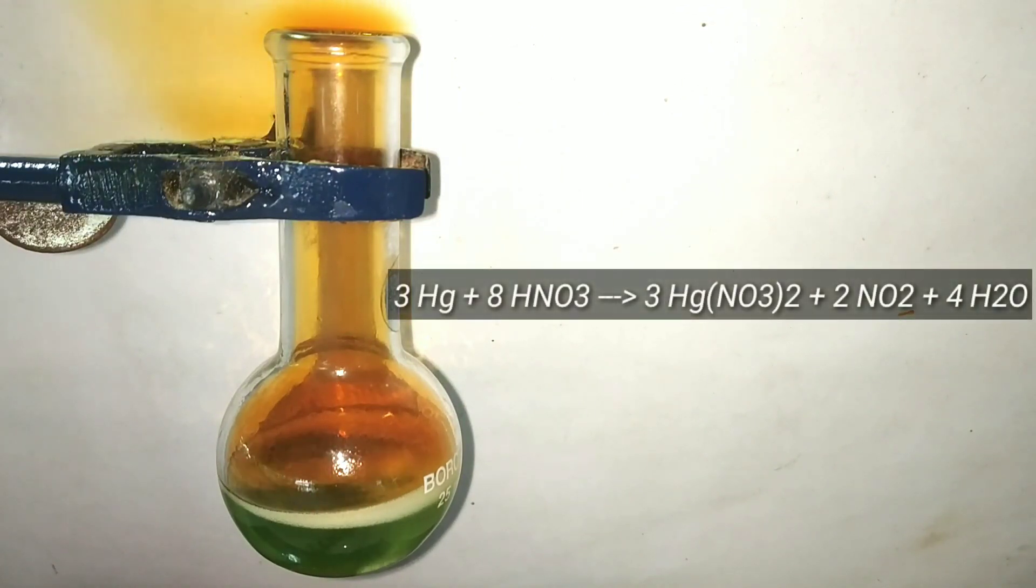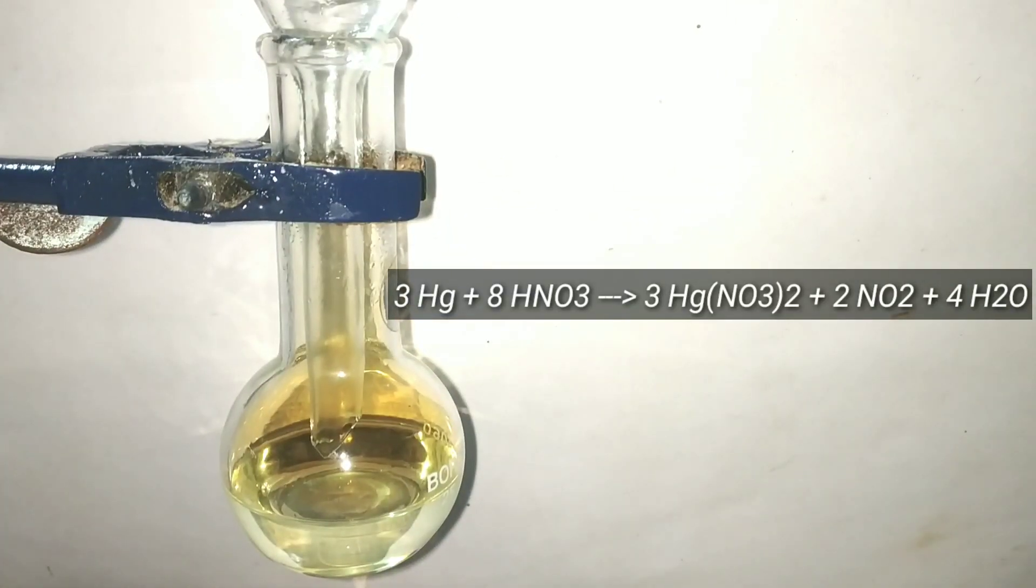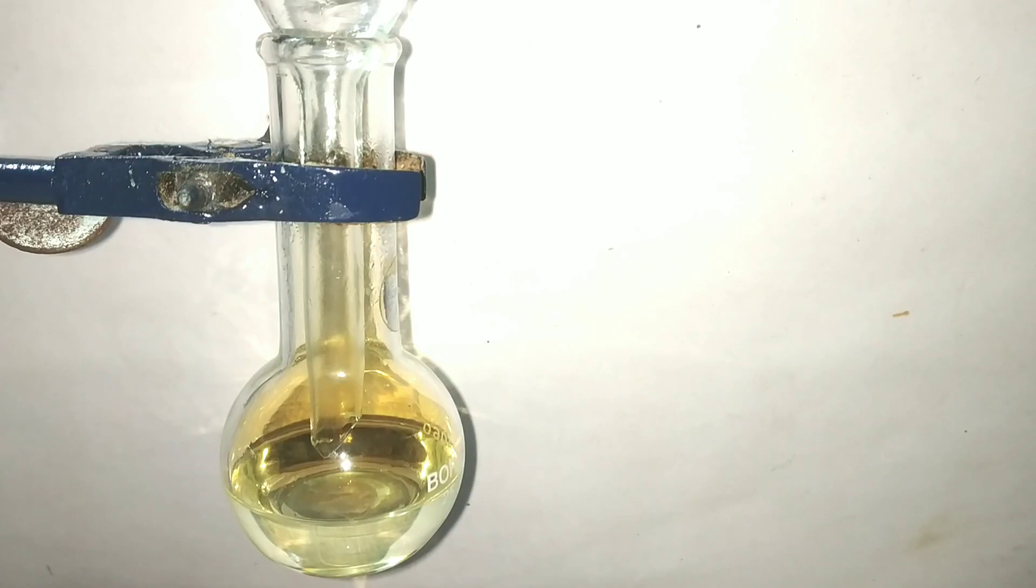But actually the predominant reaction that is going on is given on the screen. Mercury reacts with nitric acid to form mercury 2 nitrate, nitrogen dioxide, and water.